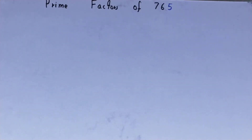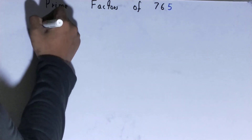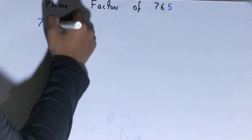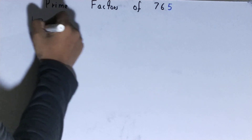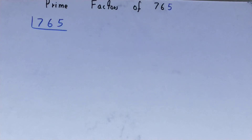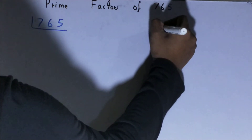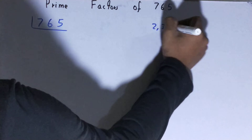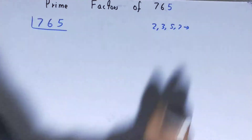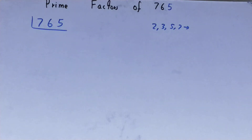Hello friends, in this video I'll be helping with the prime factors of the number 765. To find the prime factors of 765, you need to write it out. Before solving this, you must know what prime numbers are — prime numbers are numbers that are divisible by one and the number itself, like 2, 3, 5, 7, and so on.